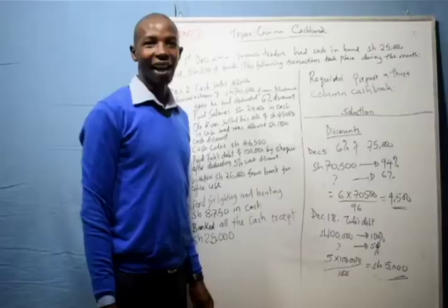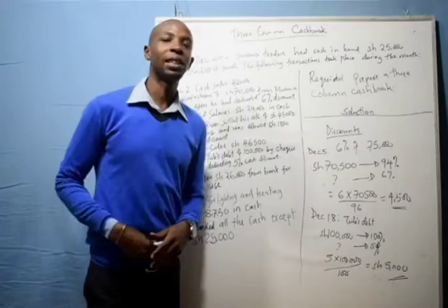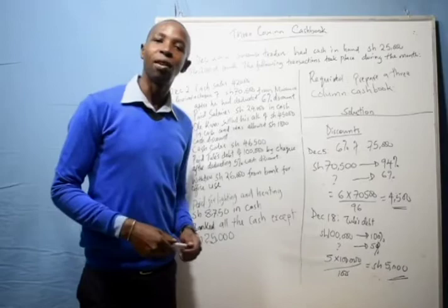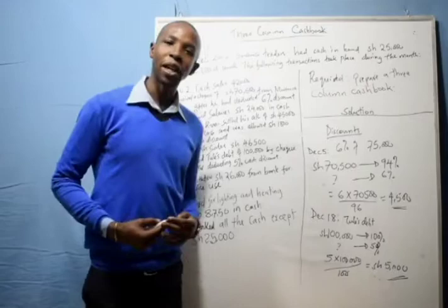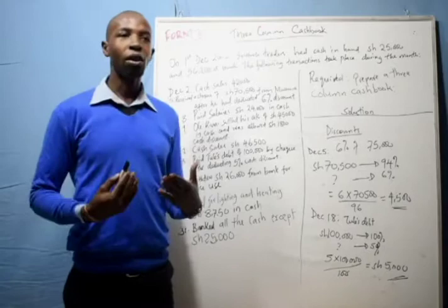Hello students, I hope you are all fine. Previously in cashbook, we discussed different types of cashbook: single column cashbook, double column cashbook, and a three column cashbook. Today I want us to see an example of a three column cashbook. A three column cashbook has got three columns: discounts, cash, and bank.